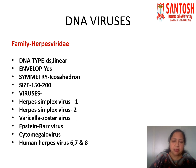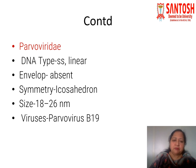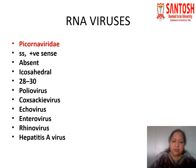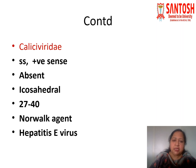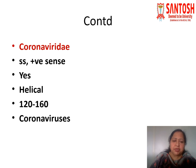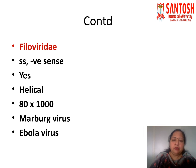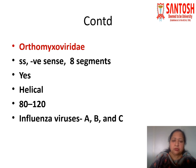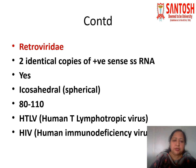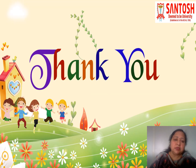DNA virus families include Herpesviridae, Hepadnaviridae, Parvoviridae, Papovaviridae, Poxviridae, and Adenoviridae. RNA virus families include Picornaviridae, Caliciviridae, Togaviridae, Flaviviridae, Coronaviridae, Rhabdoviridae, Filoviridae, Paramyxoviridae, Orthomyxoviridae, Bunyaviridae, Arenaviridae, Reoviridae, and Retroviridae. This completes the classification of viruses.